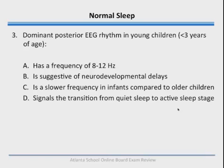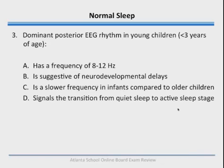This has to do with what we call the dominant posterior EEG rhythm, abbreviated DPR. This dominant posterior EEG rhythm in young children less than 3 years of age: A has a frequency of 8-12 Hz, B is suggestive of neurodevelopmental delays, C is a slower frequency in infants compared to older children, and D is the transition from quiet sleep to an active sleep stage.